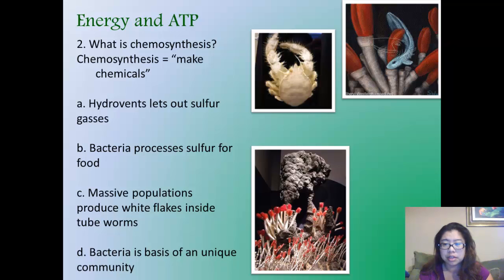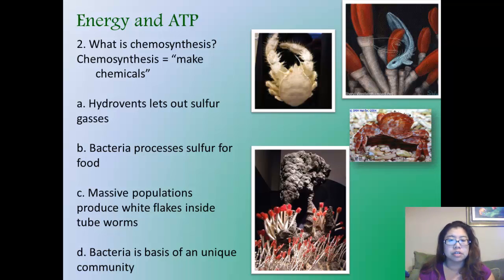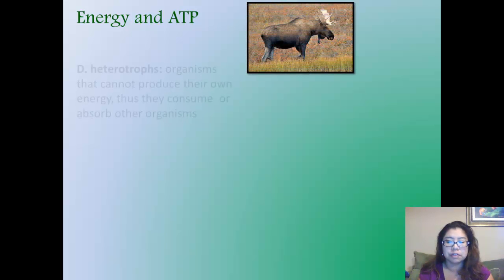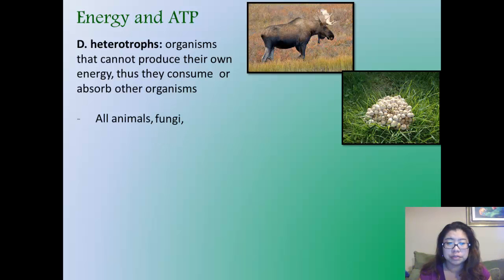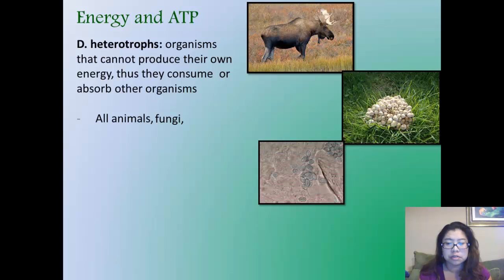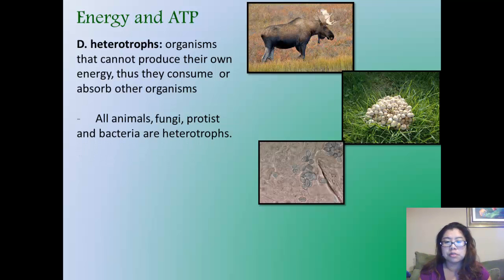We come to the second category of energy, or heterotrophs, organisms that cannot produce their own energy. Thus, they consume or absorb other organisms. In some ways, you can think that autotrophs are opposites to heterotrophs. They include all animals. You can see there's a huge and beautiful moose here. Fungi, in other words mushrooms. And protists. Protists are single-cell organisms. In most cases, they give us diseases. And bacteria are also in heterotrophs. There are certain bacteria that can be autotrophic, but most of them are heterotrophic.